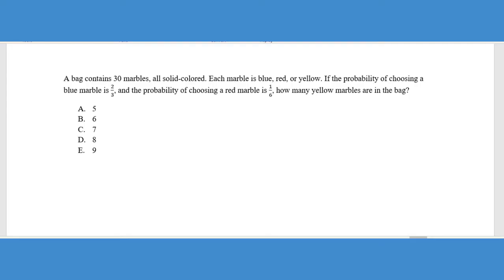It says a bag contains 30 marbles, all solid colored. Each marble is blue, red, or yellow. If the probability of choosing a blue marble is 2/3 and the probability of choosing a red marble is 1/6, how many yellow marbles are in the bag? So what we're really trying to figure out is we need to know how many blue marbles and how many red marbles there are so we can ultimately figure out how many yellow marbles are. Now there's multiple ways that you can do this. For instance, the probability would normally be the number of blue marbles over 30. We said that that equals 2/3. So you could cross-multiply and figure out how many blue marbles there are. You could also do this problem by just simply taking 2/3 and multiplying it by 30, which gives us a total of 20 blue marbles.